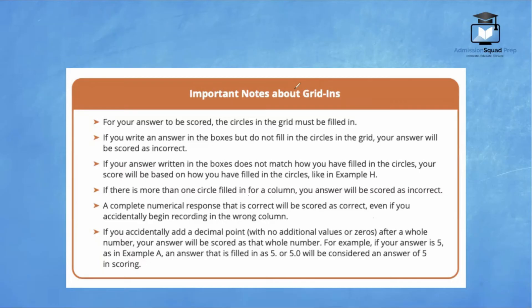Here are a few important notes about gridding questions. For your answer to be scored, the circles in the grid must be filled in. If you write an answer in the boxes but do not fill in the circles in the grid, your answer will be scored as incorrect. If your answer written in the boxes do not match how you filled in the circles, your score will be based on how you have filled in the circles, like in example H.